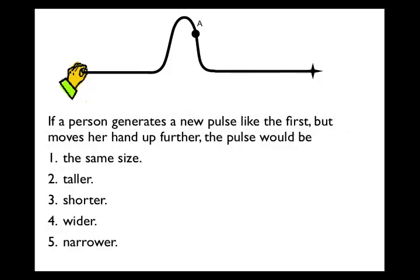If a person generates a new pulse like the first but moves her hand up further, the pulse would be what? The correct answer is taller. If you go up higher, you displace the string to a greater position initially, and that gives you increased amplitude to this wave, so you get a taller pulse.